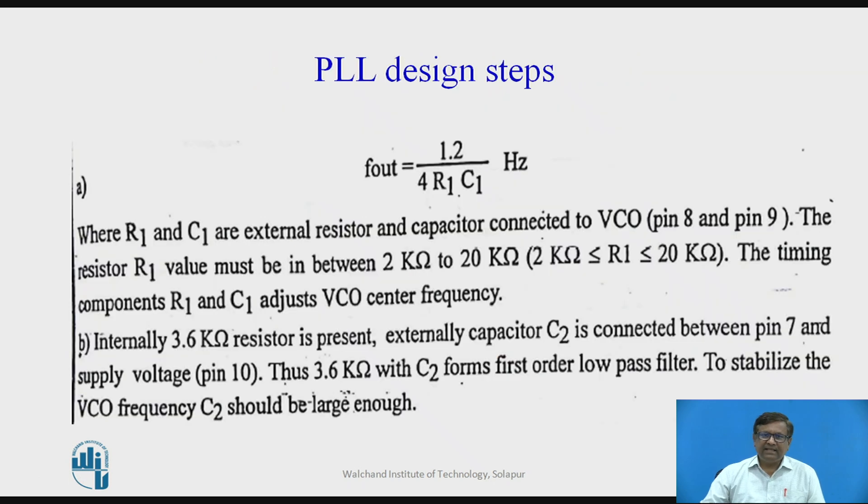Let us see the design steps of IC 565 which is PLL. The first and very important formula used for design of the PLL is VCO output frequency formula. F out is the output frequency of VCO which is depending upon this formula 1.2 divided by 4 R1 C1. As we discussed earlier, R1 and C1 are the components which decide the VCO frequency.